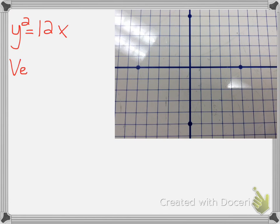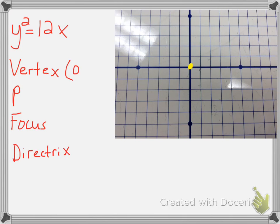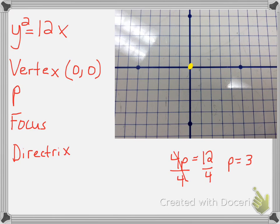Let's look at a problem: y squared equals 12x. We want to find the vertex first. Since there's nothing added or subtracted after the y and the x, the vertex is (0, 0). Next, we solve for p by taking the first number past the equal sign, setting it equal to 4p, and dividing both sides by 4. Once you divide, you get p equals 3.